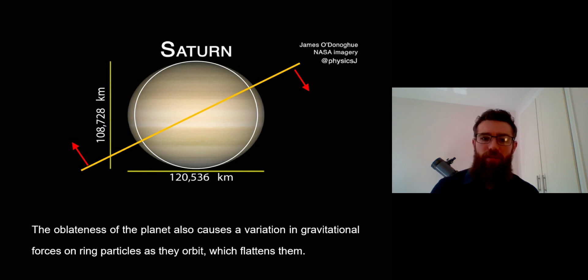If the planet's very oblate it means that it's quite squashed, and that is one of the reasons why they're quite flat and why they're quite aligned to the rotation of the planet.